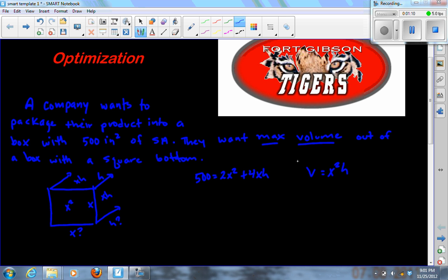I have these two equations. This one is my primary or equation to be optimized, and this is my secondary. What I need to do is reduce one of these variables out of this primary. So I'm going to solve this for x or h. H would be easiest to solve for because I could move the 2x squared and divide by 4x. And that's what h is.